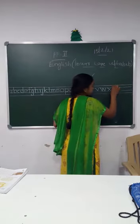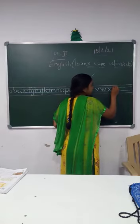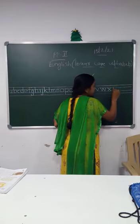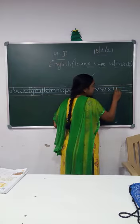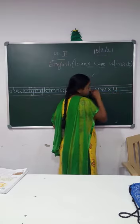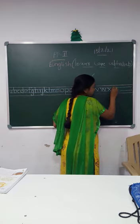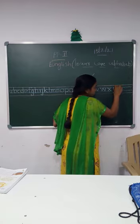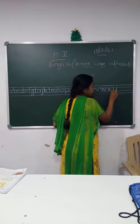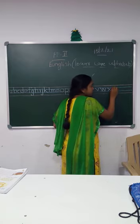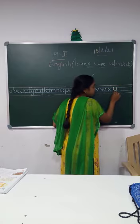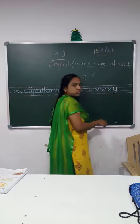Now we are going to write letter Y. Down curve, go up, come down, touch the red line, give a curve — letter Y. Start from the blue line, come down, touch the blue line, go up again, touch the blue line, then standing line and a down curve — letter Y. Once again: down curve, go up, come down, touch the red line and a down curve — letter Y.